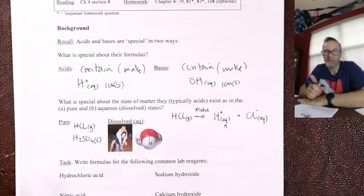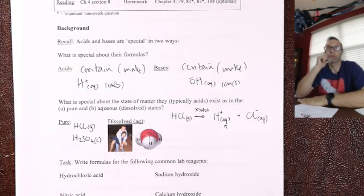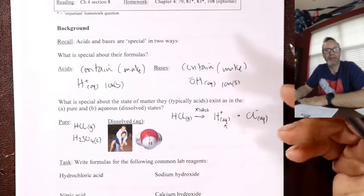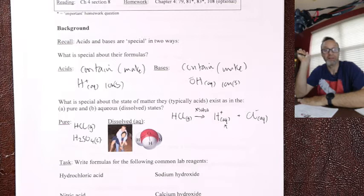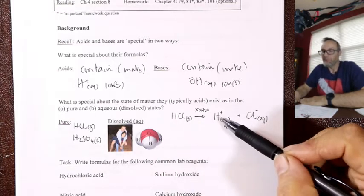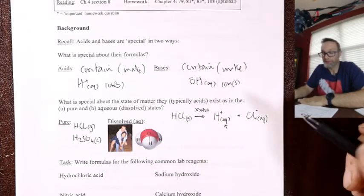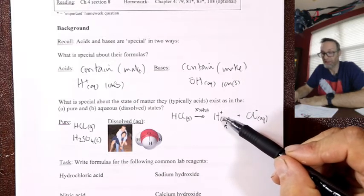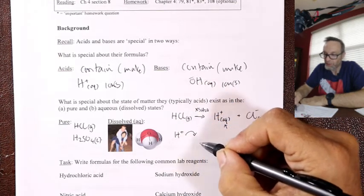Think about what the H⁺ ion actually is. Hydrogen is element number one — one proton, one electron. If I remove that electron to make H⁺, I'm left with a single proton with no outside electrons. The nucleus is 0.001% of the volume of an atom, so that naked proton is super, super tiny with a relatively large charge — it's extremely polarizing. This thing actually cannot exist in nature.